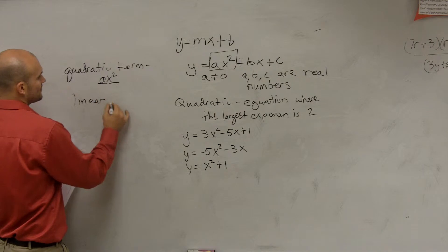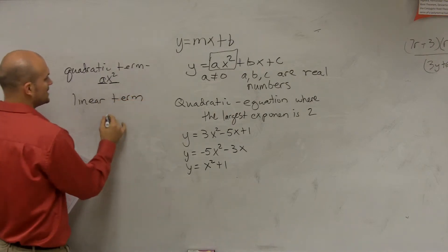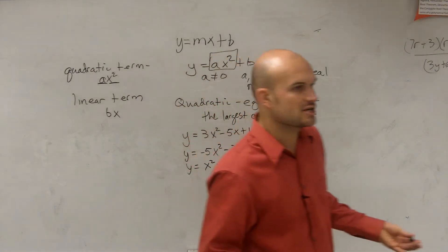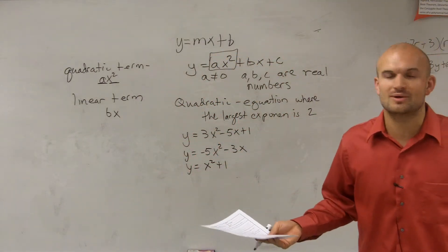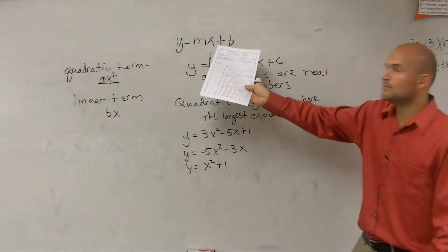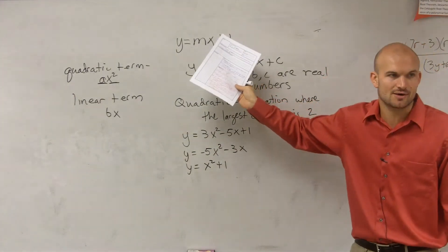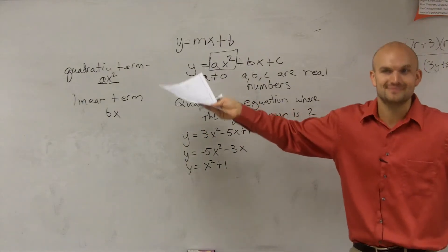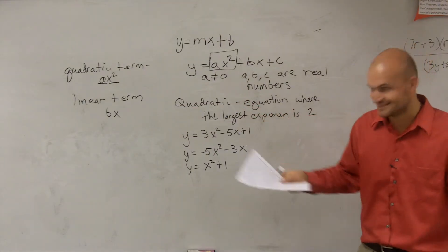Then we have our linear term. And the linear term is what we call bx. Now why is it a linear term? Well, what's the exponent of my linear term? 1, right? And we know that when we have an exponent of 1, that creates a what? A line, right? Hence, linear term, exponent 1, line, all right?